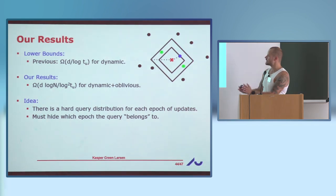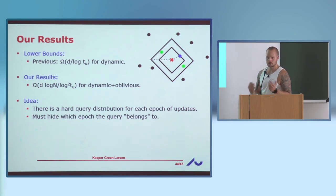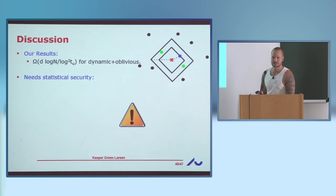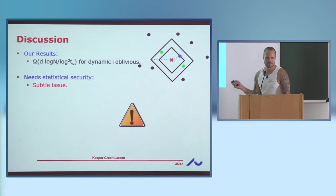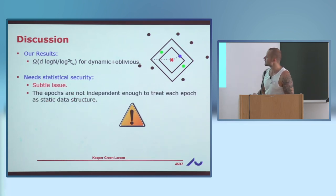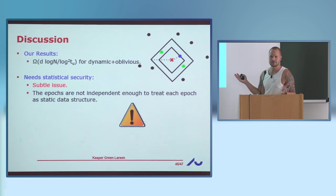Actually, there's a subtlety: this lower bound only holds for statistical security. We have to use statistical security to make the lower bound work — the different epochs are not truly independent enough to treat as separate static data structures, and cell sampling alone doesn't work. Statistical security solves this, though working out the details requires reading the paper.